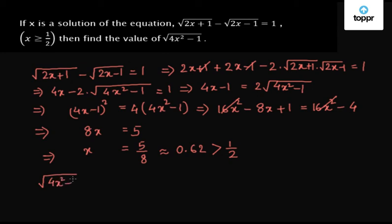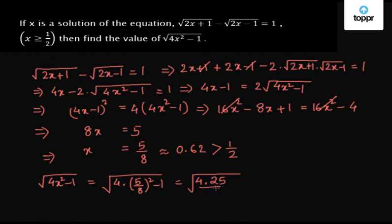Now to find the value of root over 4x squared minus 1, we substitute x equals 5 by 8 to get root over 4 into 5 by 8 whole squared minus 1. Now 4 gets cancelled, we are left with 16 in the denominator, so we get root of 9 by 16, which equals 3 by 4. So the value of root over 4x squared minus 1 is 3 by 4.